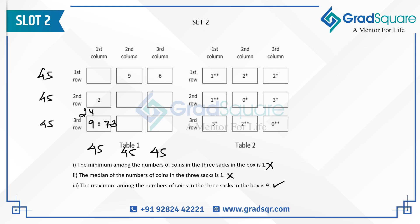Moving to the first box in the second row: it has one sack with more than five coins and satisfies two conditions. Since the median is two, the median-is-one condition is ruled out, so minimum equals one and maximum equals nine must both hold. The total must be 12 and the average is four. The column must sum to 45, with 36 already accounted for, leaving this box a total of nine. With minimum one and maximum nine, the remaining sack must be seven, giving an average of three.